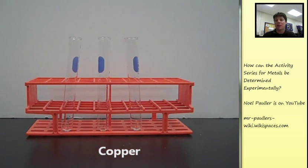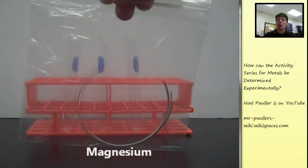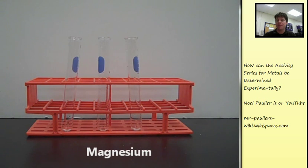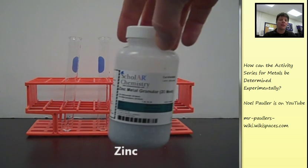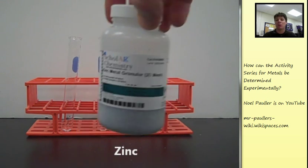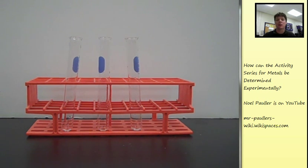We are going to be testing copper. The second metal that we're going to be testing is magnesium ribbon. Finally, the last metal that we're going to be testing is zinc, and we used a granular form of zinc for this experiment.